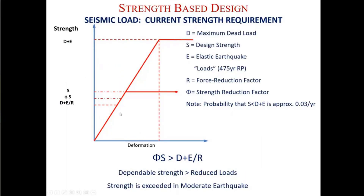In seismic design, it is a little different. This is the actual demand of the earthquake — the force level that develops when an earthquake hits the structure. But we design our structure at the level of dead load plus earthquake load divided by a force reduction factor. We may have slightly higher actual strength due to the difference between reduced and expected material strength. After this level, the building gets damaged and hinge mechanisms start to develop, but the building should have enough capacity to resist this level of deformation.